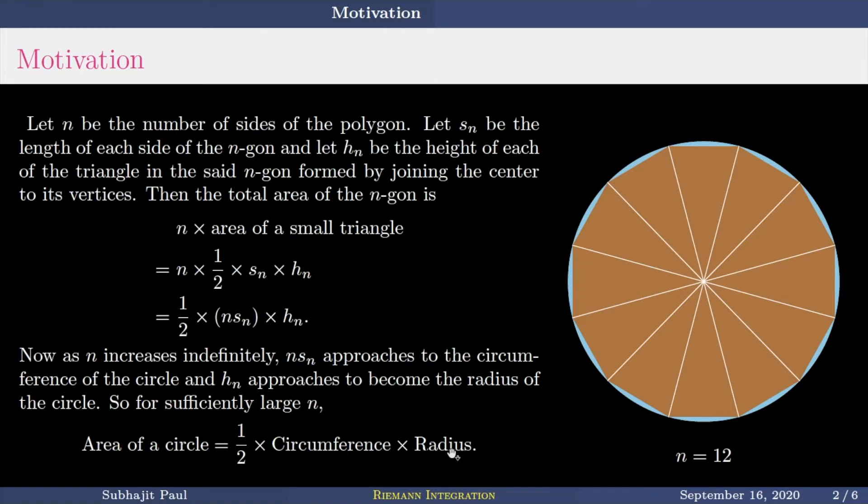So this one is done by Archimedes. Archimedes did not actually do with this process. He did some other process. Let us not go into that, but just for sake of some motivation, this process sort of is backed up by our common sense. And this seems to be true. So area of a circle is half of circumference times the radius.